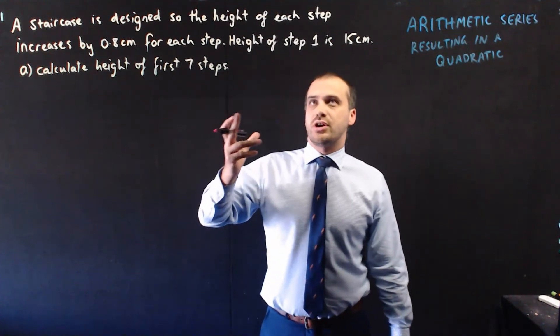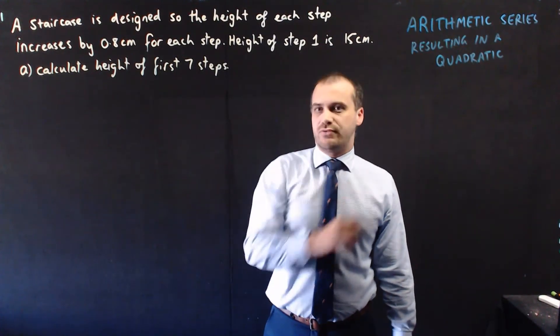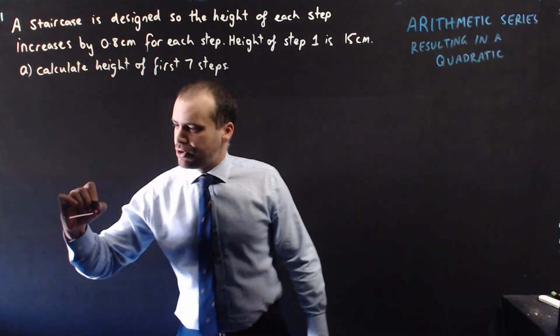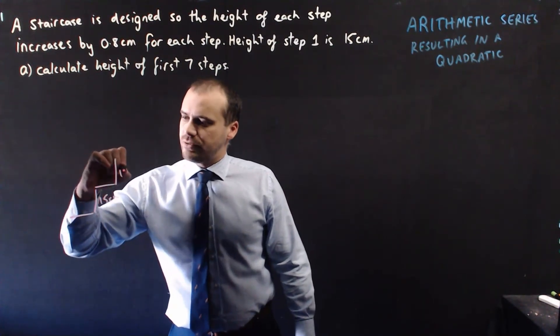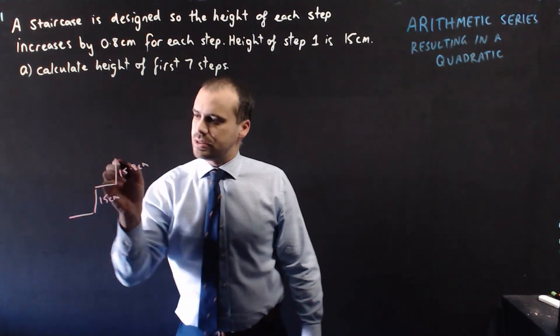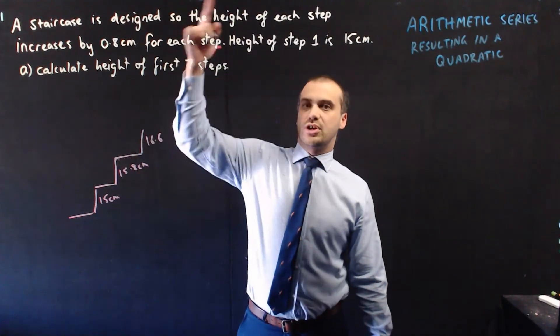A staircase is designed so that the height of each step increases by 0.8 centimeters. The height of the first step is 15 centimeters. So, first step, 15 centimeters. Second step, 15.8 centimeters. Next step, 16.6 centimeters, and so on.